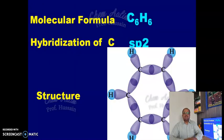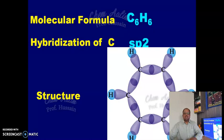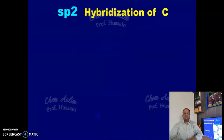The molecular formula of benzene is C6H6. All 6 carbon atoms of benzene undergo sp2 hybridization. To understand the structure of benzene, you first have to understand the structure of ethene, which is C2H4.